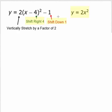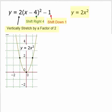And y equal 2x squared, because of the 2, is a vertical stretch by a factor of 2. Here is y equal 2x squared. We have a vertex at 0, 0, and we have one point at x equal 1, y equal 2, and x equal negative 1, y equal 2.